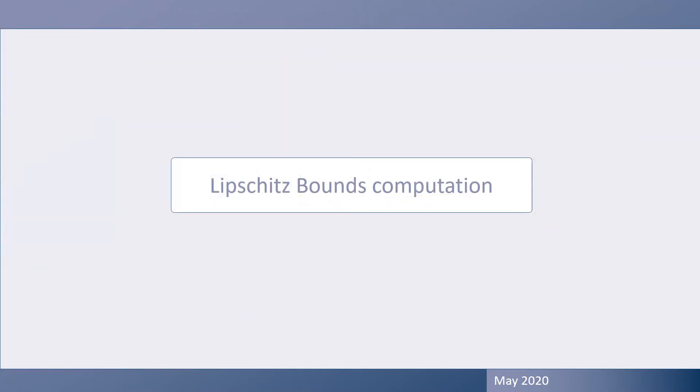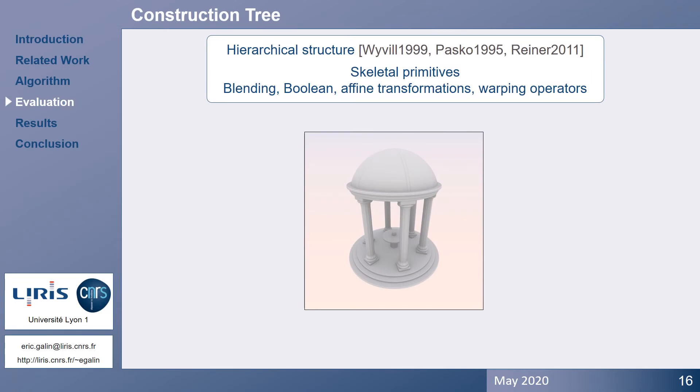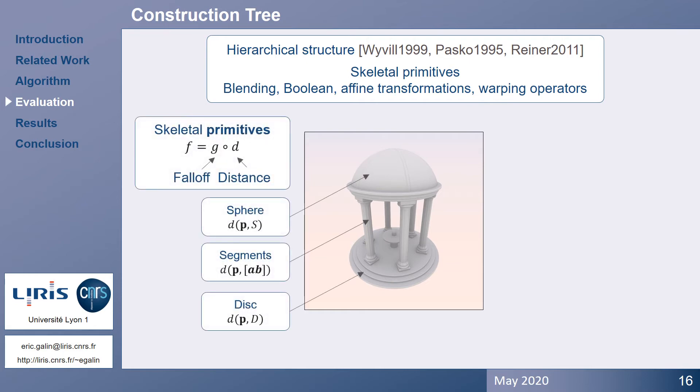Now the challenge consists in evaluating the local Lipschitz bounds of the field function. Here we consider an implicit model defined as a hierarchical construction tree. The tree combines skeletal primitives with blending, boolean, warping, and affine transformations. The field function f is evaluated by recursively traversing the tree. The leaves contain skeletal primitives, and their field function is defined as the combination of a fall-off kernel function applied to the Euclidean distance to their geometric skeleton.